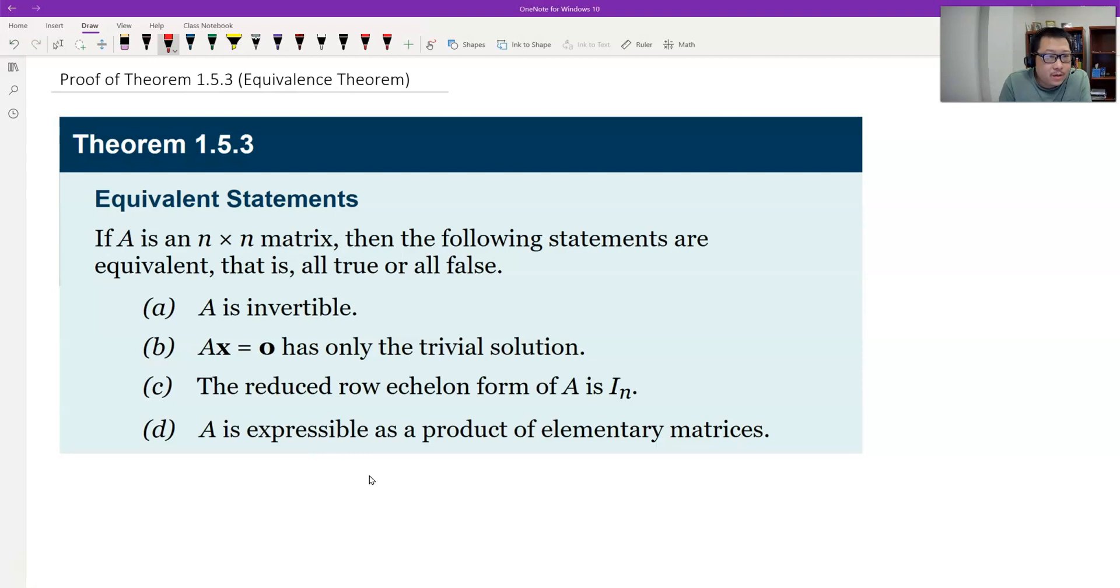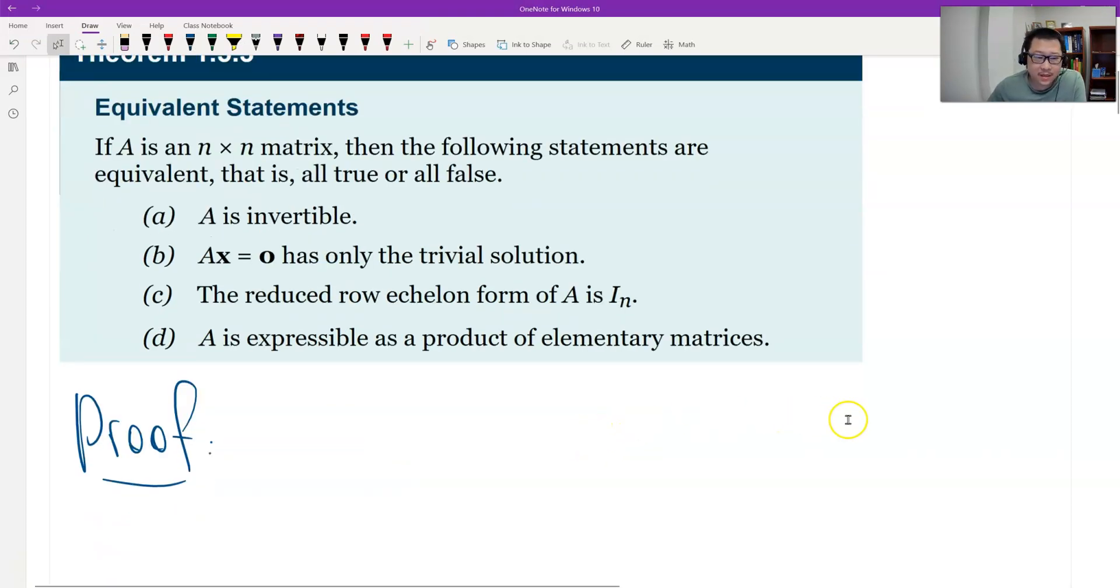Now let me give a proof. We follow this basic strategy. We prove A implies B, then C, then D. If A is true, I get B is true. If B is true, I get C is true. If C is true, I get D is true. And if D is true, I can find A is true back. I get a loop. In this way, A and C are equivalent, because A can get B, can get C, and C also can get A. So we do this strategy to do the basic proof.